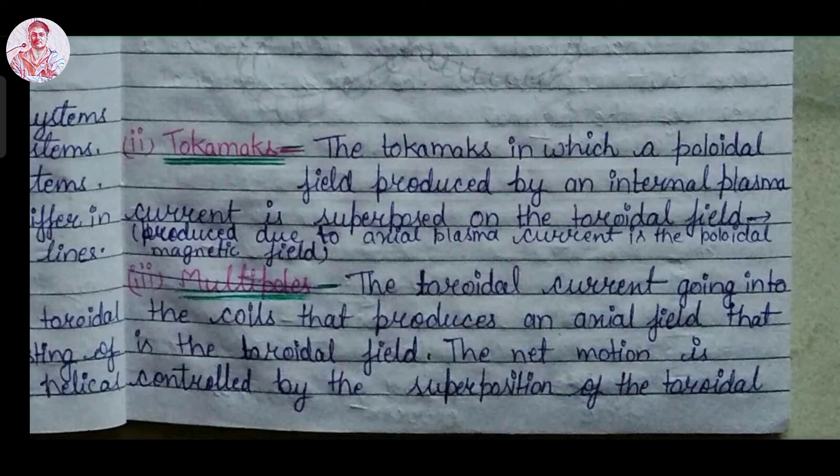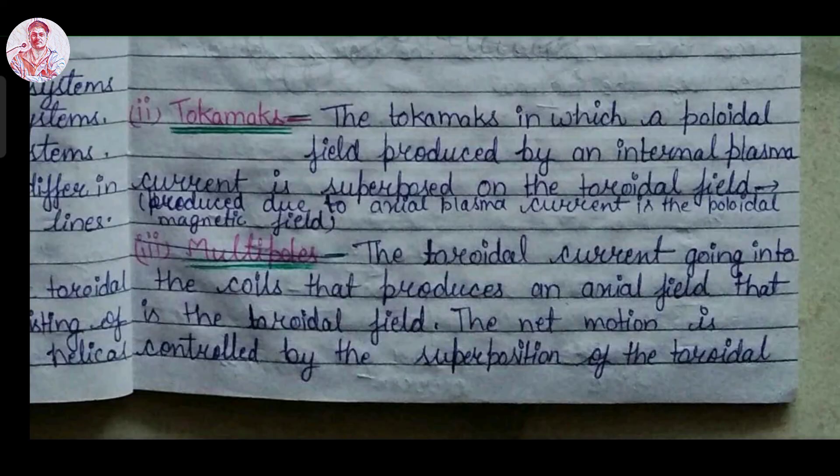Our second closed system is Tokamak. The Tokamak in which the poloidal field produced by an internal plasma current is superimposed on the toroidal field. The toroidal current going into the coil produces an axial field that is the toroidal field. The net motion is controlled by the superposition of toroidal and poloidal magnetic fields.